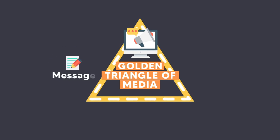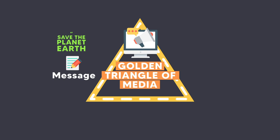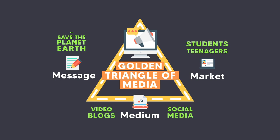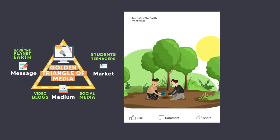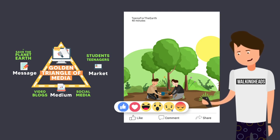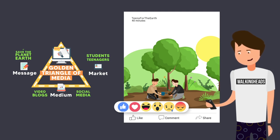The Golden Triangle of Media works this way: a message is conceptualized by the advertisers and their creative team, while at the same time critically thinking about the demographics of their market, and finally deciding which media or platform is the best one to launch the campaign. The media triangle is a framework that can make or break a good marketing strategy — if one factor of the three doesn't fit well, it might lead to failure.